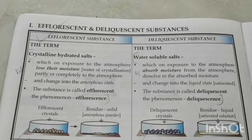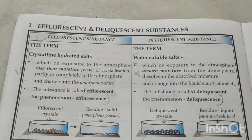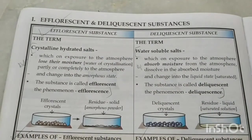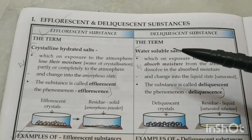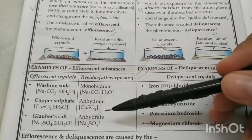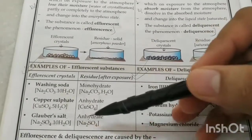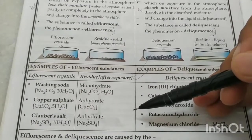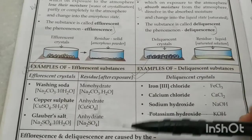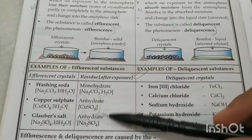Now let's understand the difference between efflorescent and deliquescent substances. Efflorescent substances are crystalline hydrated salts — for example, sodium carbonate decahydrate (washing soda) or copper sulfate pentahydrate. When exposed to the atmosphere, they lose their water of crystallization — completely or partially — and become anhydrous. For example, Glauber's salt simply becomes sodium sulfate. This phenomenon is called efflorescence, and once these salts lose their water of crystallization, they are no longer crystalline but become amorphous.